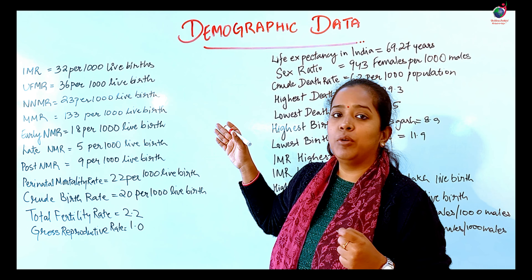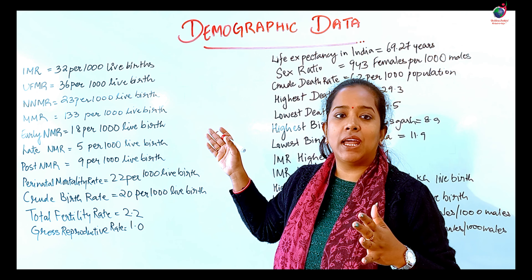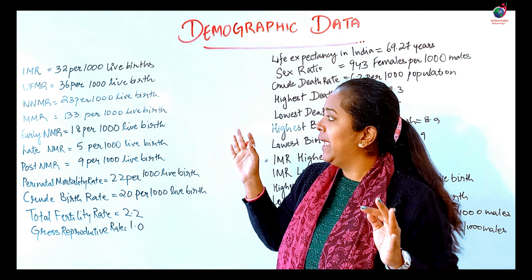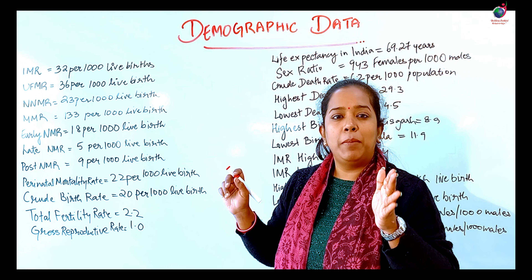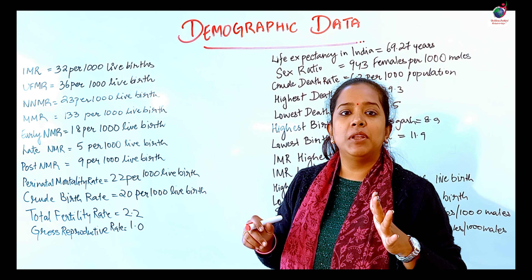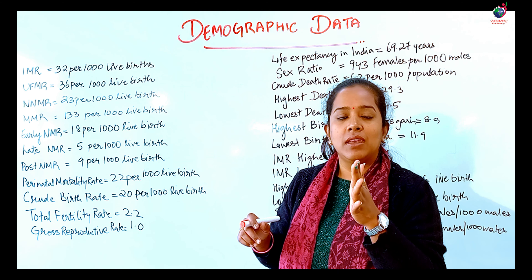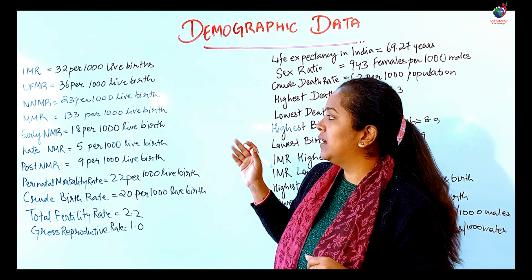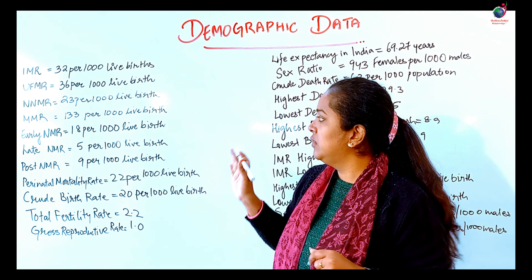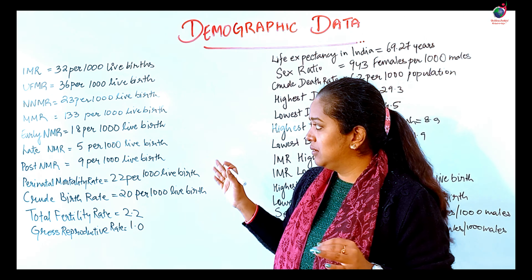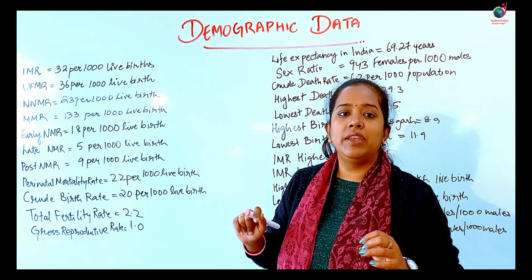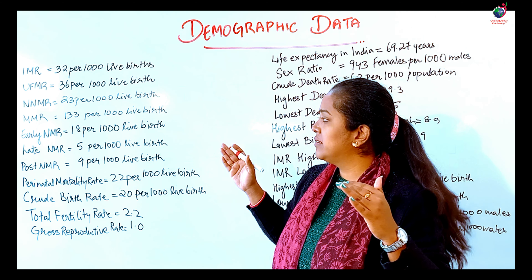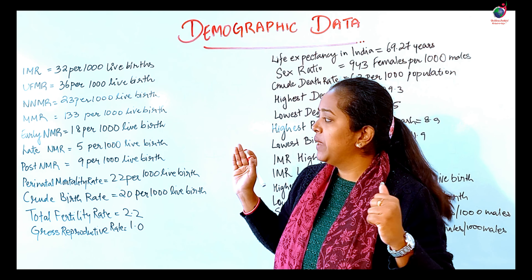NMR is Neonatal Mortality Rate, that is 23 per 1,000 live births. MMR is Maternal Mortality Rate — maternal means mothers — that is 133 per 1,00,000 live births. Late Neonatal Mortality Rate is 5 per 1,000 live births.